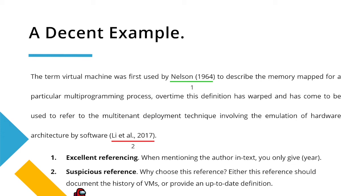The second reference raises suspicion. Unless the specific paper provides a history of virtual machines or an updated definition that other research widely cites, it is redundant. There may be a need for this reference, but don't just chuck them in willy-nilly — there has to be a rhyme or reason why they're there.